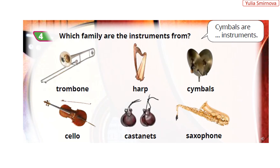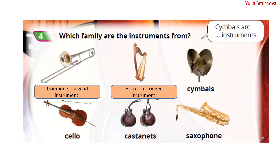Let's do activity number 4. Which family are the instruments from? З якої родини є ці інструменти? For example, trombone is a wind instrument – тромбон це духовий інструмент. Harp is a stringed instrument – арфа струнний інструмент. Cymbals are percussion instruments – цимбалы ударні інструменты.